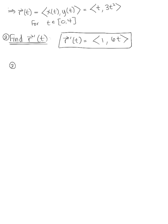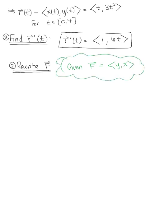We'll also use our parameterization to rewrite the force field. We'll keep in mind that we were given the force field vector F in terms of x and y, so we have the components <y, x>. We can now rewrite this using our parameterization. The force field as a parameterized function is defined as the vector <3t squared, t>.